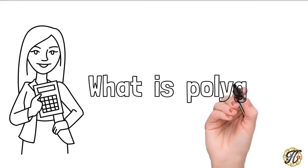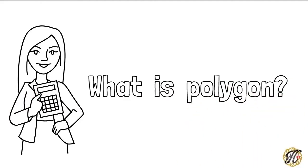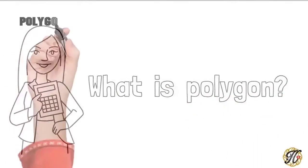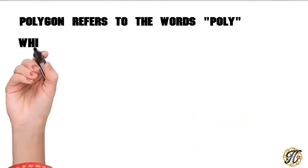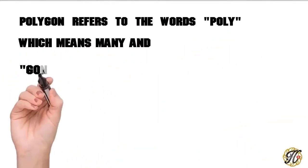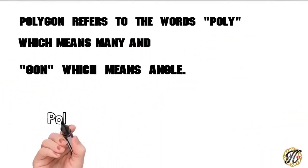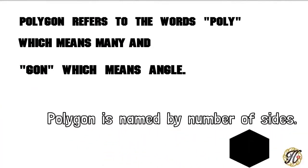What is Polygon? Polygon refers to the words poly, which means many, and gon, which means angle. Polygon is named by number of sides.